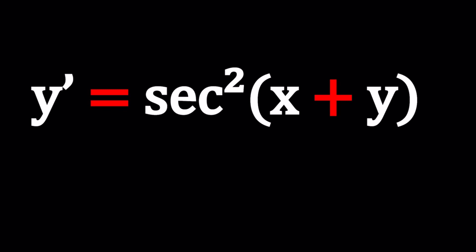In this case we have x + y on the right hand side, so that calls for substitution. Let's go ahead and call that something, how about t? What does that imply?